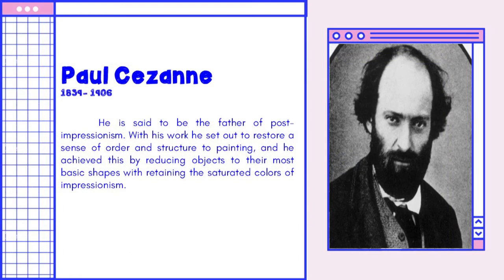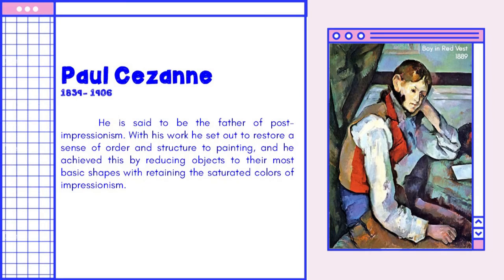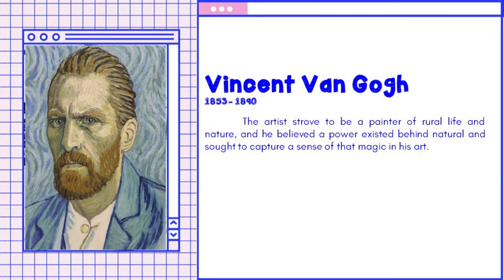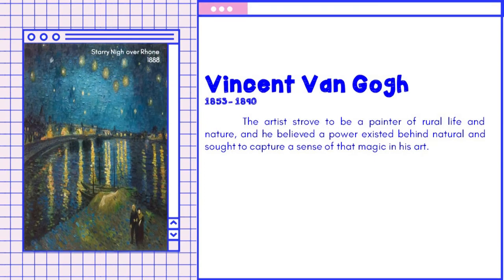Cézanne is said to be the father of post-impressionism. In his work, he set out to restore a sense of order and structure to painting, and he achieved this by reducing objects to their most basic shapes while retaining the saturated colors of impressionism. Van Gogh strove to be a painter of rural life and nature, and he believed a power existed behind the natural world and sought to capture a sense of that magic in his art.